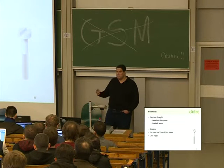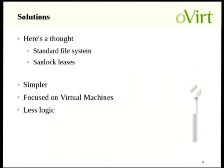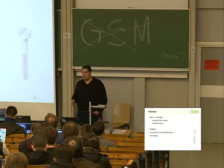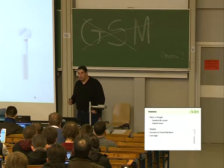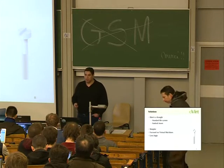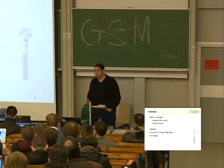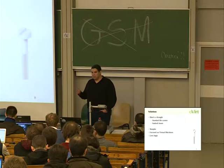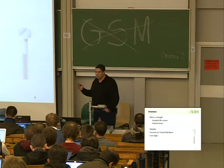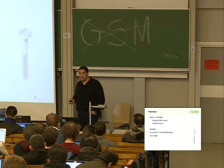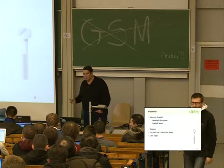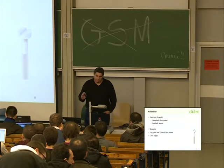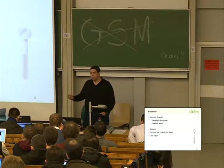So this is how we started — this is the available solutions landscape as we saw it. We said, let's think a bit more about that. Let's consider a standard file system, not a proprietary one, and go for sanlock-based leases. Sanlock is a locking mechanism developed as part of the oVirt community project, and it enables us to provide leases for disks or for VMs. So we said, let's make sure that sanlock provides the locking mechanism and we will work with NFS or other standard file systems. That gives us something simple enough, open source, focused on virtual machines — so there's not a lot of extra logic like the other solutions. It's much simpler and should be easier to implement.